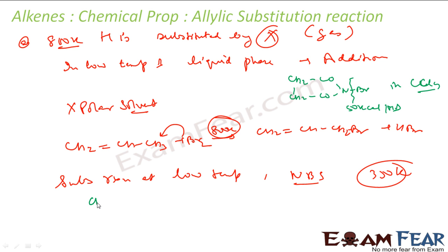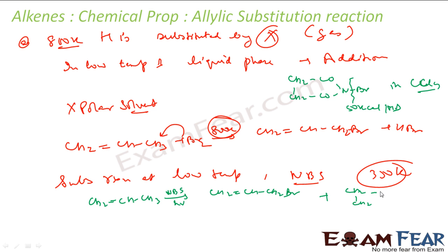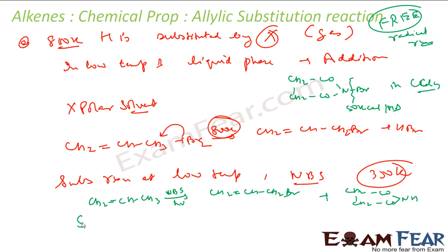So for a compound like CH2=CH-CH3 (propene), if you use NBS in the presence of sunlight, the bromine replaces the allylic hydrogen. You get the allyl bromide product, plus you get succinimide (CH2-CH2-CO-CO) as the other product, because this is a free radical reaction.